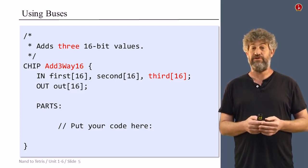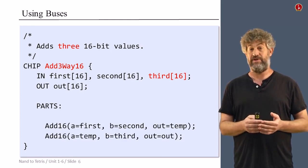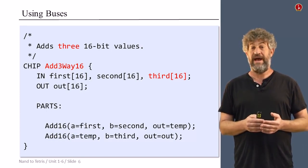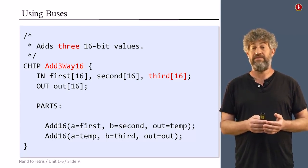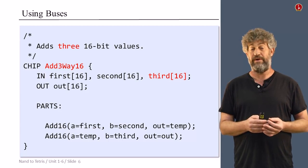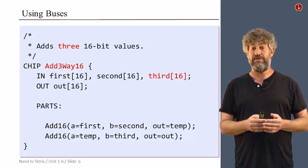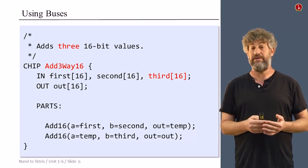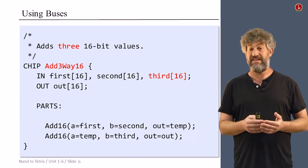This is how we do that in HDL. We have two internal chips. One of them adds two 16 bits, the Add16 chip that we've just seen. And we add the first and the second inputs and plug the result into a temporary variable called temp, which is also 16 bits. And then we take this temporary variable, or temporary wire if you wish, or temporary bus of 16 wires, and add it to the third, getting our final output. And this is how we can just manipulate inside HDL the buses as entities.